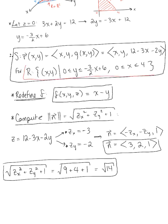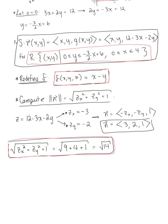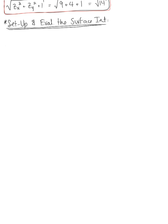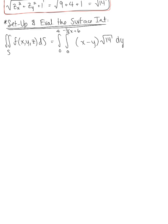We now have all the pieces needed to set up our surface integral. Using our bounds on region R, our function F, and the magnitude of the normal vector, the surface integral over S of F(X,Y,Z) dS becomes the integral from 0 to 4 of the integral from 0 to (negative 3 halves X plus 6) of (X minus Y) times the square root of 14, dY dX.